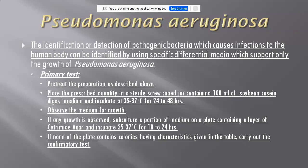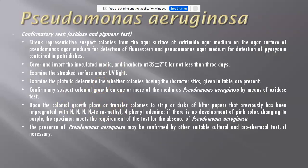After incubation, if no colonies appear on the cetrimide agar plate, that means the particular product does not consist of any pathogen. If growth is observed, we must perform the confirmatory test because the growth on cetrimide agar may be Pseudomonas aeruginosa or another bacteria, so we confirm using the oxidase test or pigmentation test.